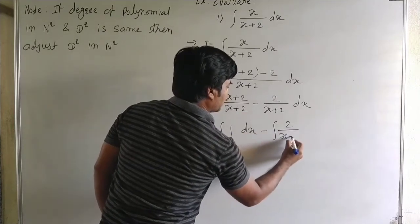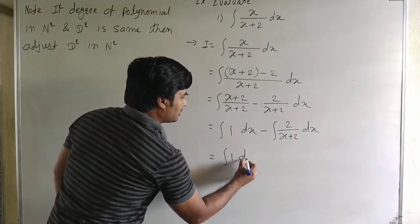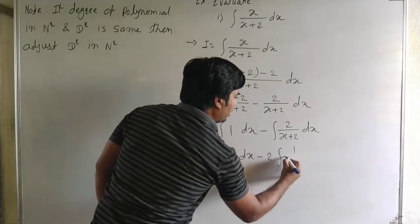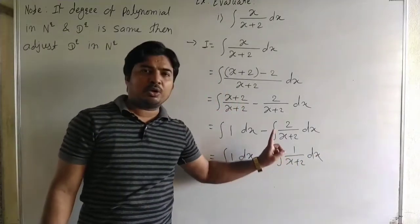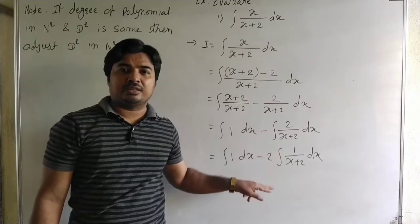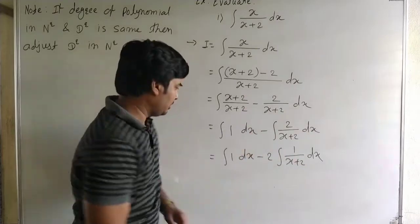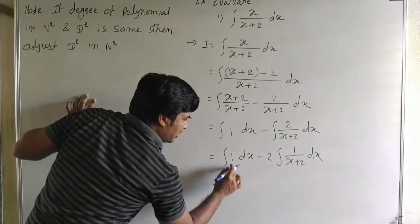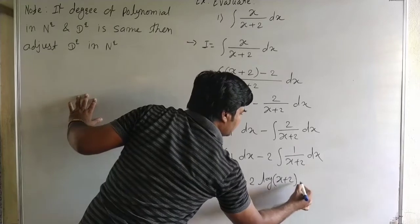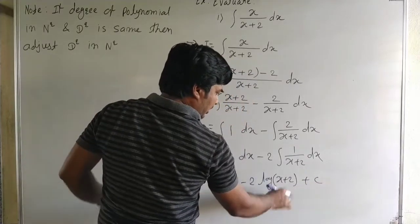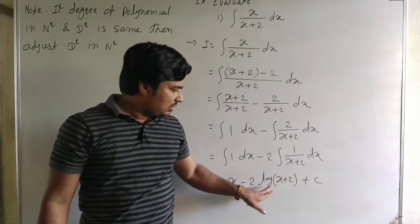Now it is integral of 1 dx minus integral of 2 upon x plus 2 dx. That is integral of 1 dx minus 2 into integral of 1 upon x plus 2 dx. Here 1 upon x plus 2 is a linear form, and the integral of 1 by x is log x. Therefore integral of 1 upon x plus 2 is log of x plus 2.